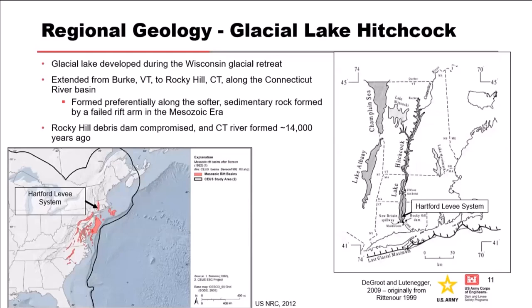Due to a failed rift basin in the Mesozoic, the Connecticut Valley was formed, allowing sediments to accumulate and turn into sedimentary rocks. Sedimentary rocks aren't that common in New England, so this is an interesting area. Glacial Lake Hitchcock is also a big driver for us to consider along the Connecticut River — it was formed by a glacial dam that created a glacial lake along the Connecticut River Valley, extending from Burke, Vermont, down to just south of the Hartford levee.